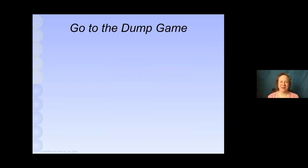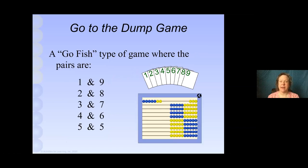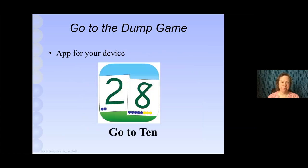One real simple game and a very fun one that the kids love to play is called Go to the Dump. It's a go fish type of game where the pairs are one and nine, two and eight, whatever makes 10, three and seven, so forth. You just need the basic number cards, one through nine, and an abacus. In the beginning, they're going to be checking to make sure that they're asking for the right amount. And that's good. Eventually, they won't need the abacus to play the game. There's also an app for your devices, phones or iPads. It's called Go to 10.